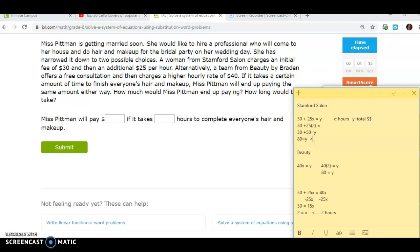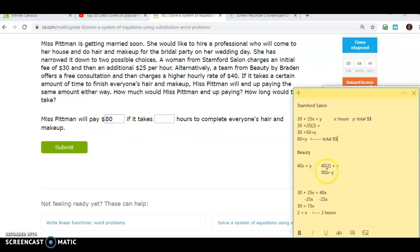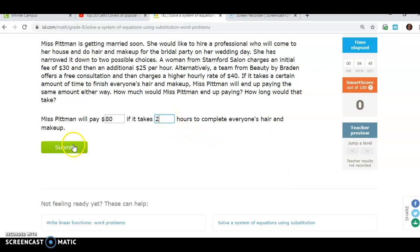Alright, so now that, oh that is not what I meant to do. There we go. Alright, that right there is our Y, so that's our total dinero, our total money there. So now we're going to take a look at our situation. Ms. Pittman will pay, well, how much will she pay? She will pay $80, oh my notes disappeared, if it takes them 2 hours. Okay, and we hit submit.